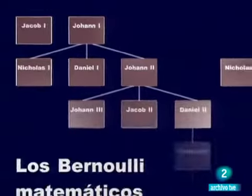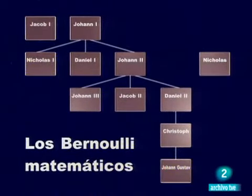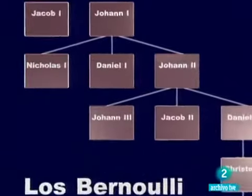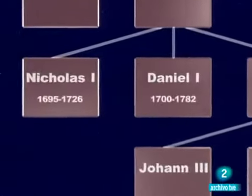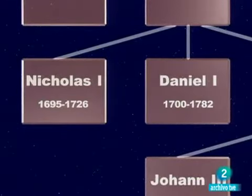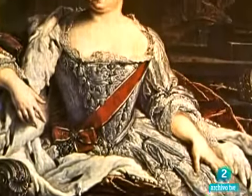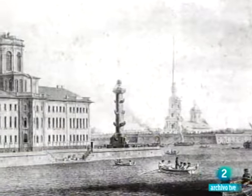Euler había estudiado en Basilea bajo la tutela de Jean Bernoulli, junto a los hijos de este, Nicolaus y Daniel. Nicolaus y Daniel fueron fichados por Catalina la Grande como profesores de matemáticas de la recién creada Academia de San Petersburgo.